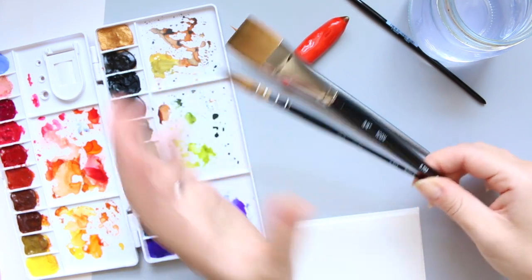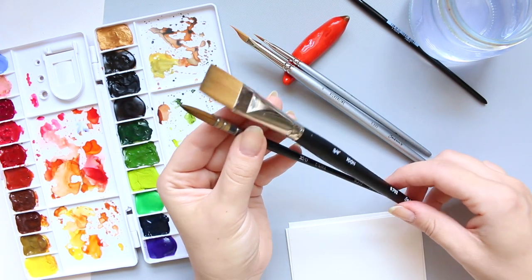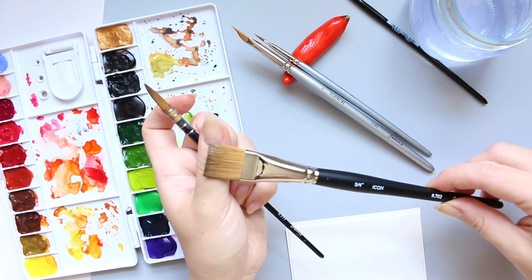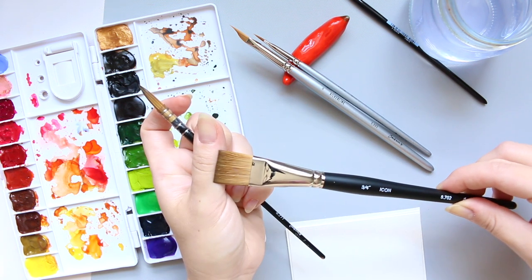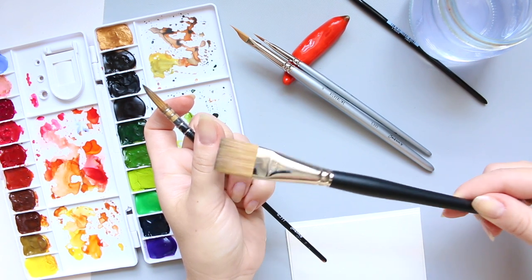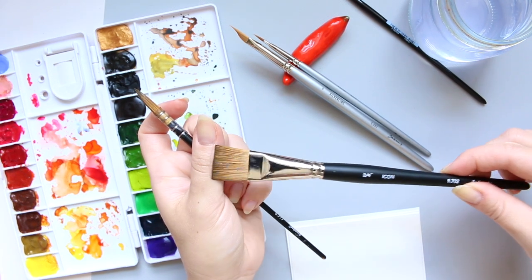So I have now looked up on their website and this quill brush is in fact from their Icon range. So these two brushes have the same bristles and the bristles are sable and synthetic mix.